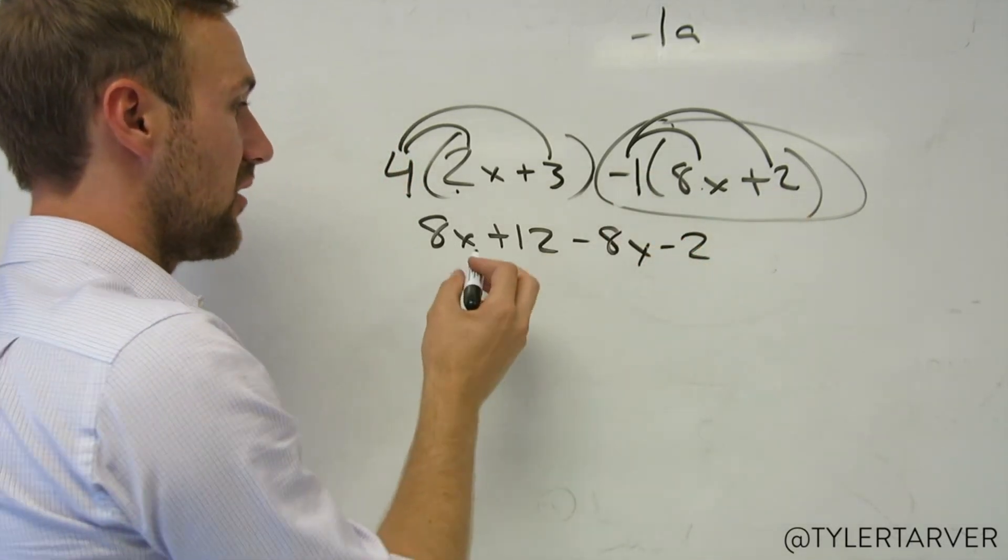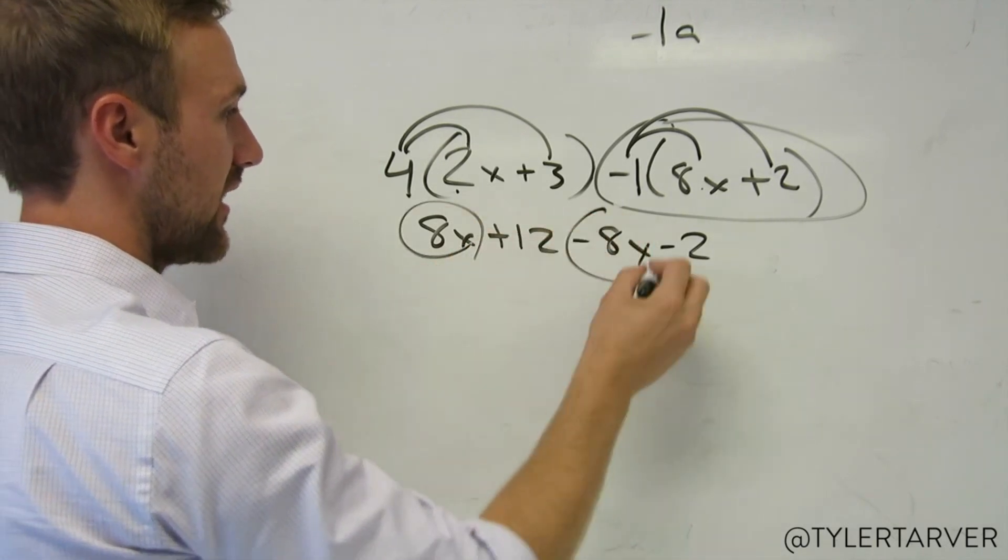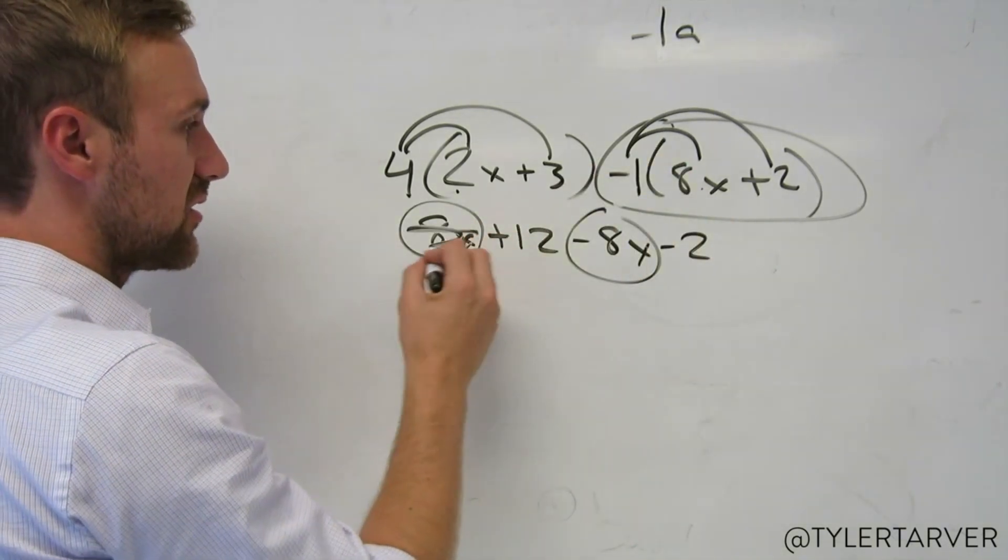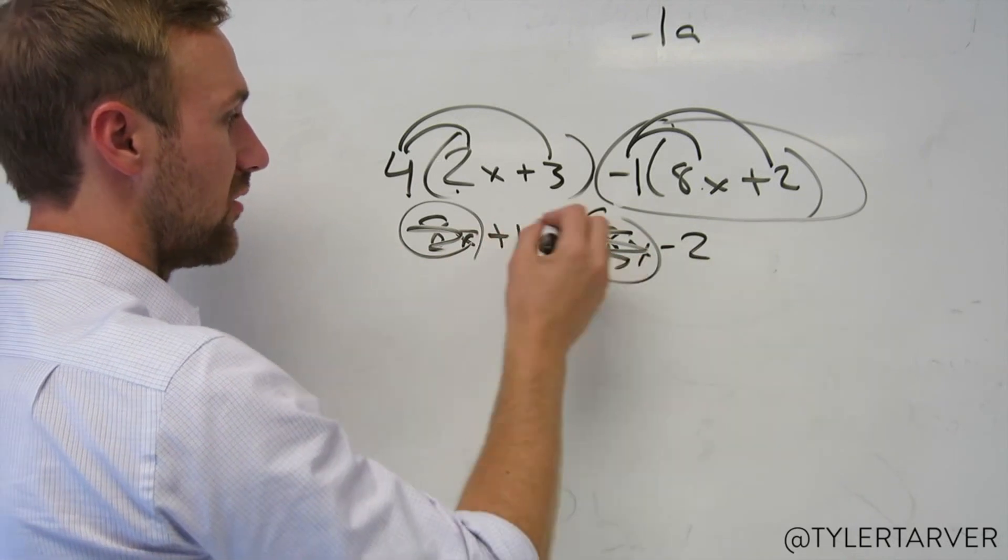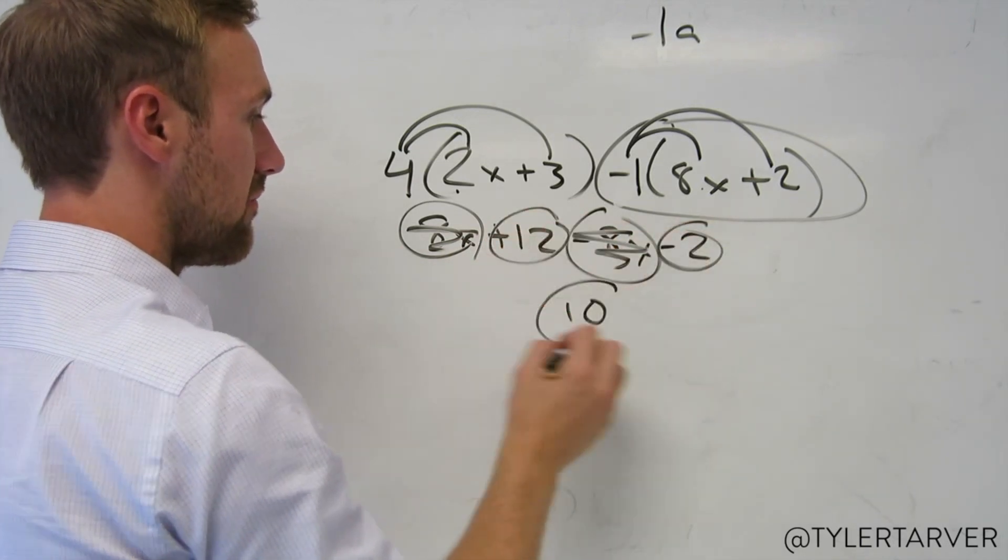And then you would combine your like terms. You got 8x minus 8x. Well, that happened to work out nicely. Those cancel each other out. And then 12 minus 2 is 10. You got your answer.